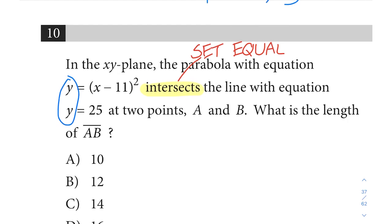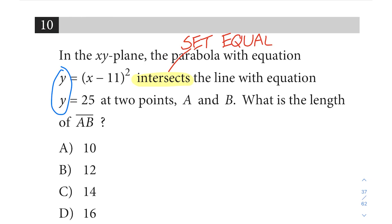It's kind of like you're using substitution. They tell you an expression for y in each case, so here we would have (x minus 11) quantity squared equals 25.